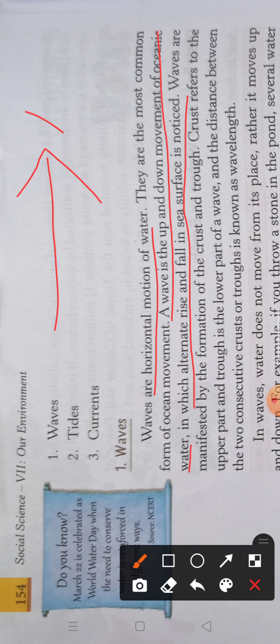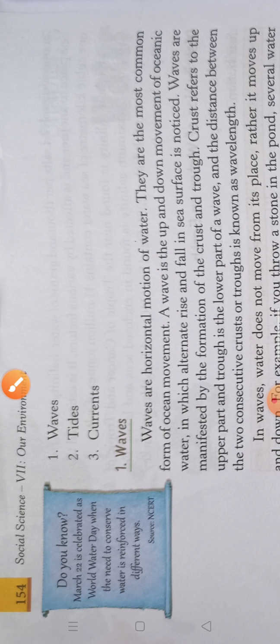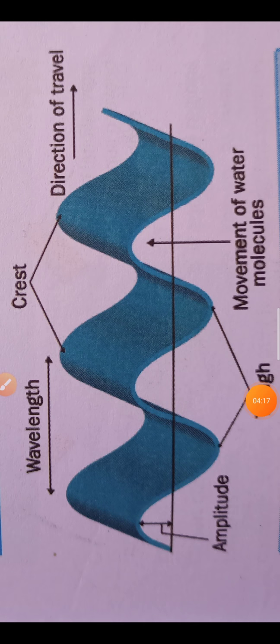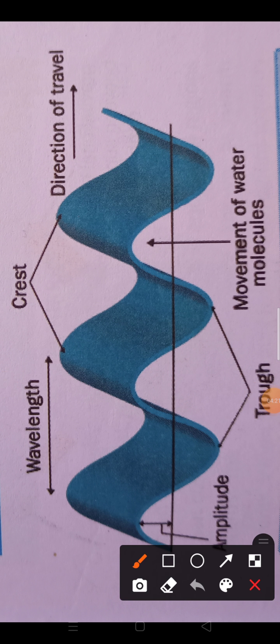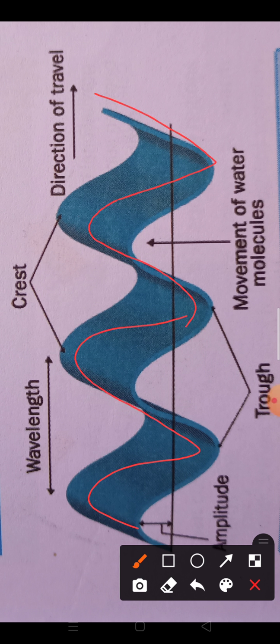We will understand the topic of waves with the help of a diagram. This is the diagram of a wave moving in the horizontal direction, as we have already discussed. From the diagram we have some important terms: first, crest; second, trough; third, amplitude; and fourth, wavelength.